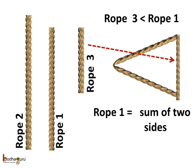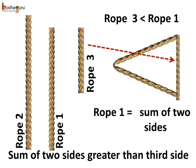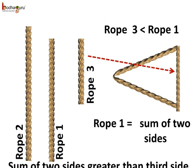So rope 3, which is the last side of the triangle, has to be shorter than rope 1, which we have folded to make the two sides of the triangle. What does it mean? Well, it means in any triangle the sum of two sides is always greater than the third side.